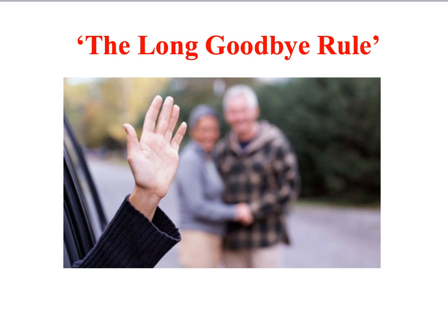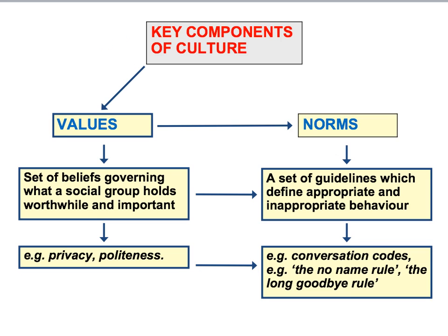Another social norm identified by Kate Fox is the long goodbye rule. She writes that if you're visiting an English home you should allow a good 10 minutes — possibly 15 or even 20 — from the initial goodbyes to your final departure. This reflects the emphasis placed on politeness: to simply say goodbye and leave immediately is seen as impolite. Kate Fox's book clearly shows that social values and social norms are closely related — the value of privacy leads to the no-name rule, and the value of politeness gives rise to longer goodbyes.